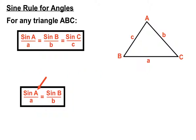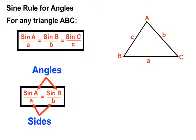On the top of our sine rule for angles, that's where our angles go — capital A and capital B indicate angles. And underneath, that's where the sides go. So in both cases, on the left-hand side and the right-hand side of the equal sign, it's the sine of the angles on top over the sides on the bottom.